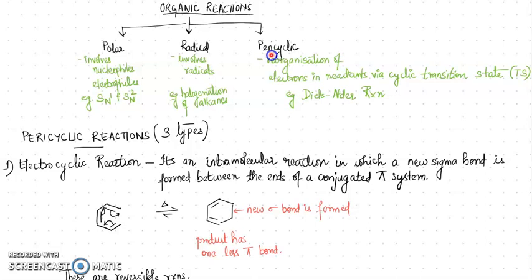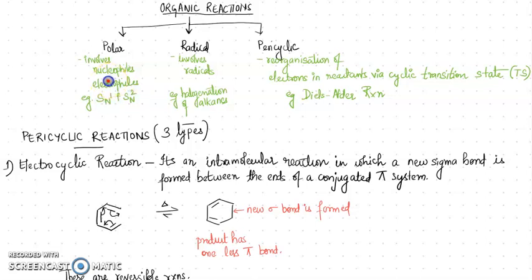In polar reactions, you see charged species like electron-rich species such as nucleophiles and electron-poor species like electrophiles. Here you will talk about nucleophilic substitution reactions, electrophilic substitution, aromatic substitution reactions, and nucleophilic aromatic substitution reactions — all involving charged species. That is why these reactions are classified under the class of polar reactions.